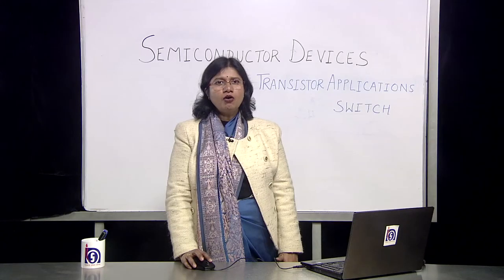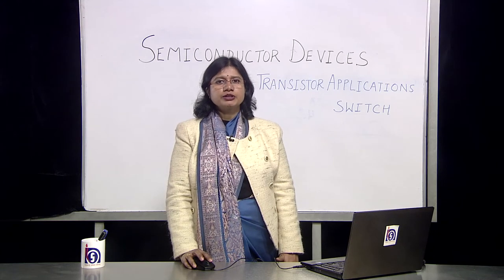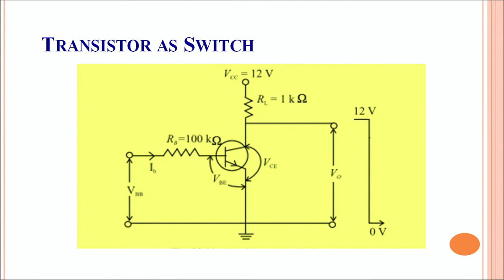This is the circuit of the transistor as a switch. The transistor is in the common emitter configuration. In this configuration, we give the input voltage and measure the output voltage across the output circuit. The load is applied accordingly, and the input and output resistances are adjusted so that we are able to achieve cutoff through this transistor, which acts like a switch.